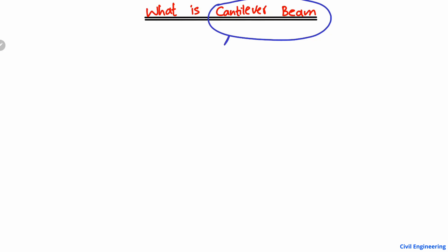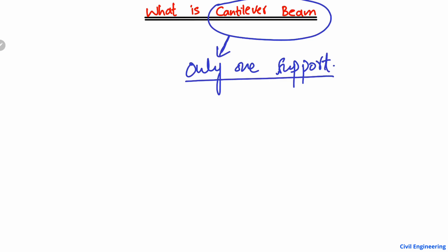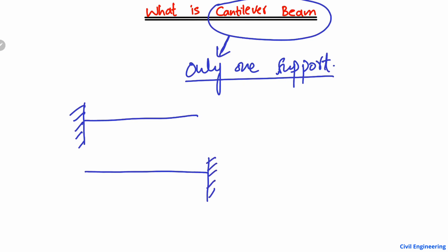The cantilever beam can be defined as a beam that has only one support — this is the speciality of this type of beam. What does it mean by only one support? It means if I draw this beam, it is only supported here at this end. Or if I draw this beam the other way, it is only supported here at this end.